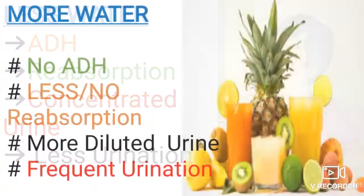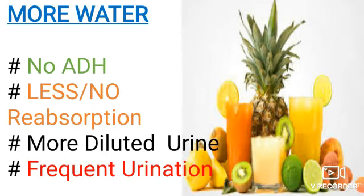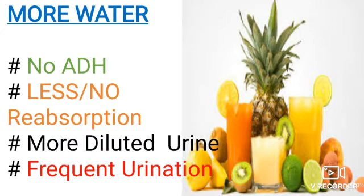Similarly, in those who are taking a high amount of fluids, juices, vegetables, or fruits along with water, there may be more water in the body. In this case, ADH is not released, which leads to the formation of diluted urine. As a result, people release more diluted urine and go to urinate frequently.